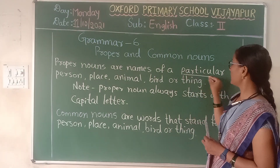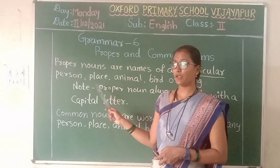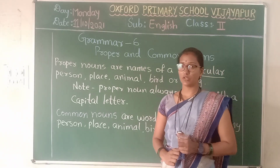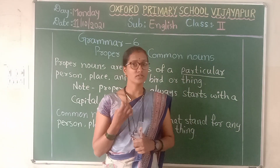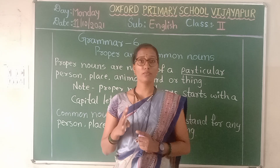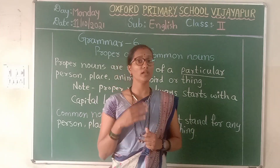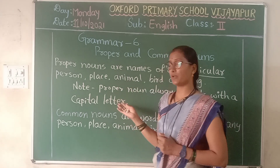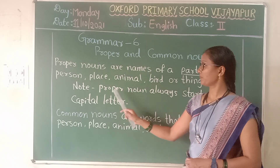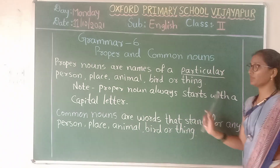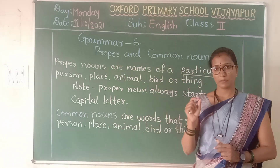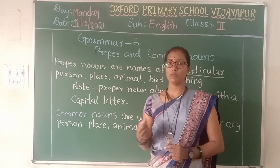Underline the word 'particular.' Note: Proper nouns always start with a capital letter. Names of days, months of the year, and river names — the area where water and land is located — these are proper nouns, and they are always written with a capital letter. Because they are the special name given to a particular place, person, animal, bird or thing.